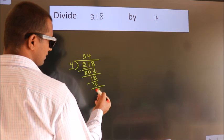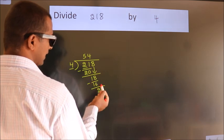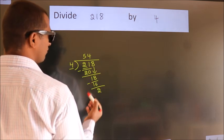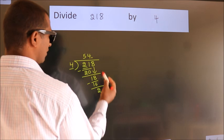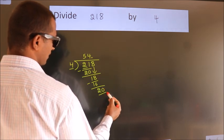After this, no more numbers to bring down. So what we do is, we put dot take 0. So, 20.